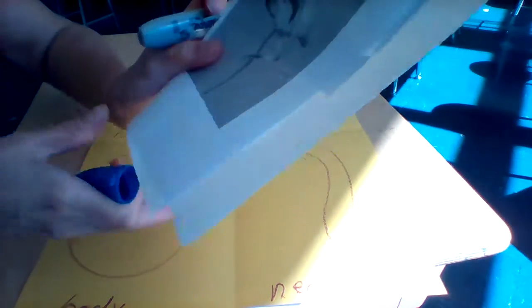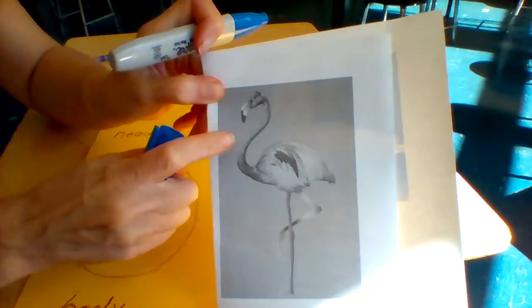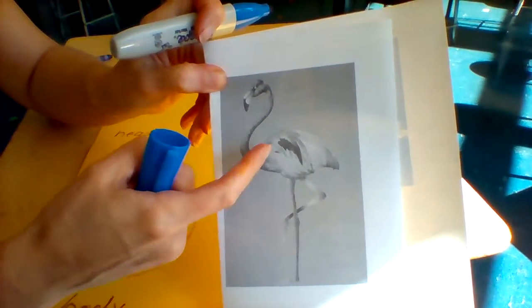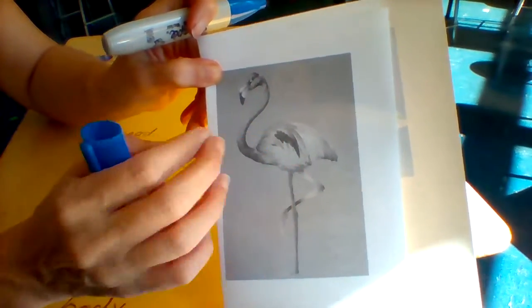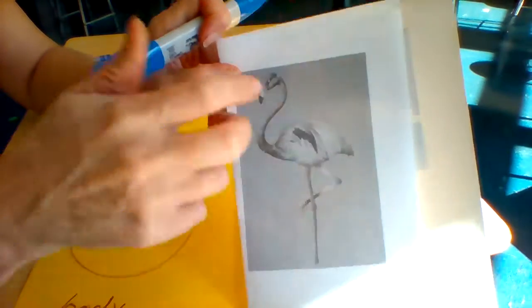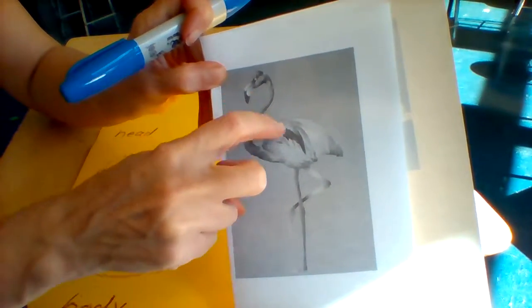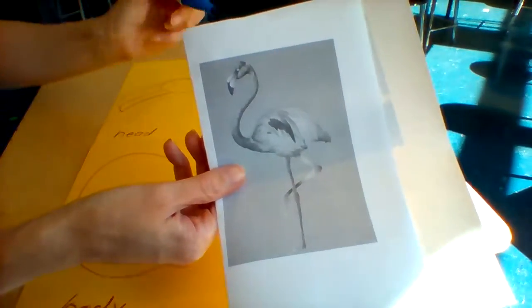So again, you're going to be looking at your photo of your bird, and you're going to be looking at how the feathers go. It might be a little bit blurry, but make the best of what you see. Look at the different kinds of lines, and you're going to be mimicking those in your bird.